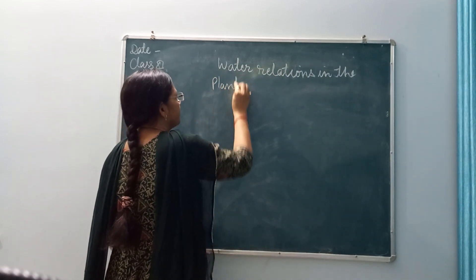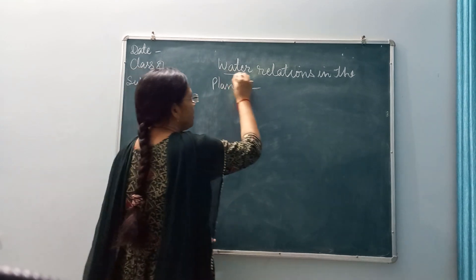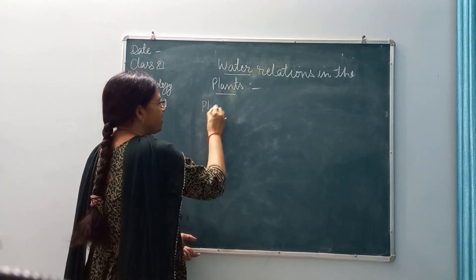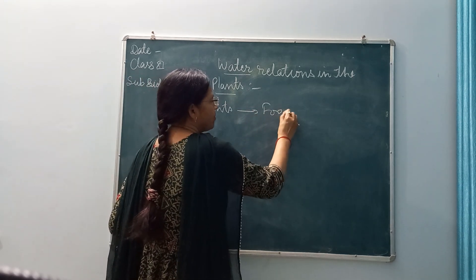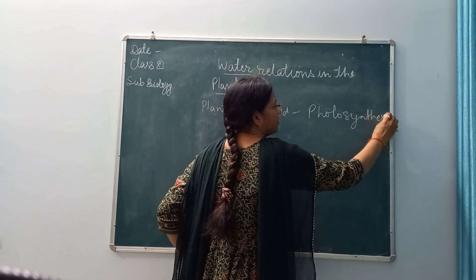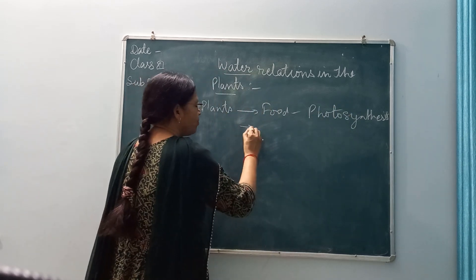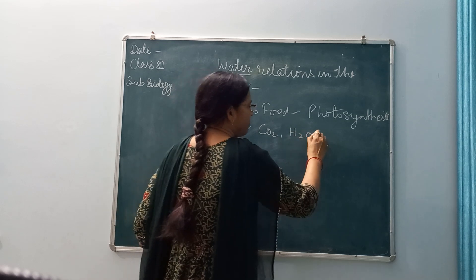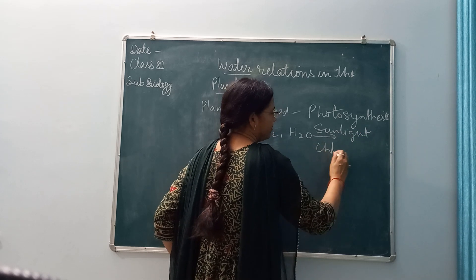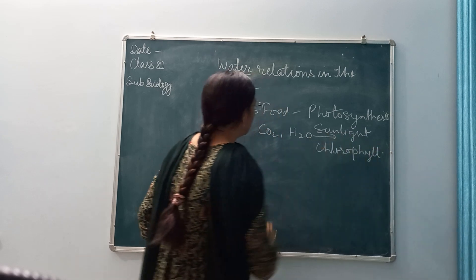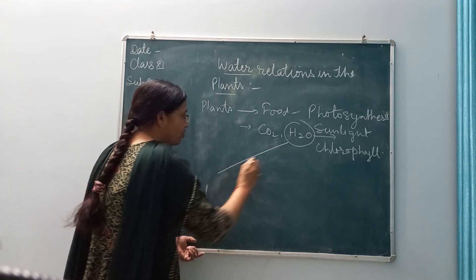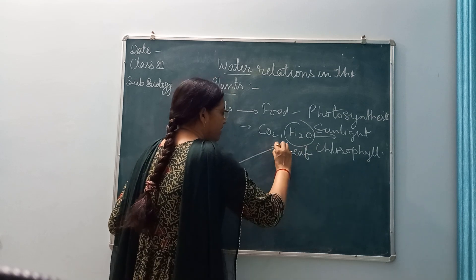Now, how is water related to plants? As you all know, plants make their food by the process of photosynthesis, and for this they use carbon dioxide and water in the presence of sunlight and chlorophyll.